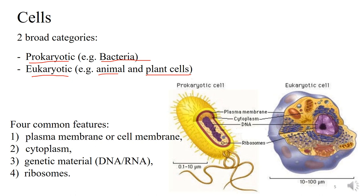Here you see a prokaryotic cell and a eukaryotic cell, and there are four common features shared between them: the plasma membrane, also called the cell membrane; the cytoplasm; the DNA, which is the genetic material; and the ribosomes. These features are found in both the prokaryotic cell and the eukaryotic cell.